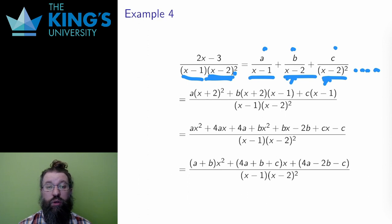From this point, once I know what the decomposition should look like with the repetition for the multiplicity 2 factor, the steps are the same as before. I go to common denominator by multiplying by the missing terms in each fraction. Notice that in the last fraction, I only need to multiply by x minus 1, since x minus 2 squared is already in the denominator.